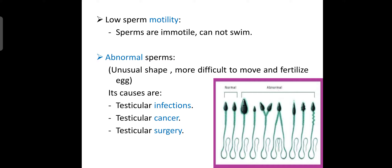The next cause is low sperm motility — the sperm are immotile and cannot swim to reach the fallopian tube or ovary to fertilize the female egg. Abnormal sperm with unusual shape are more difficult to move or fertilize; this can be caused by testicular infection, testicular cancer, or testicular surgery. In the picture, the normal sperm shape is shown on one side, while abnormal shapes such as two tails or big tails are shown on the other.